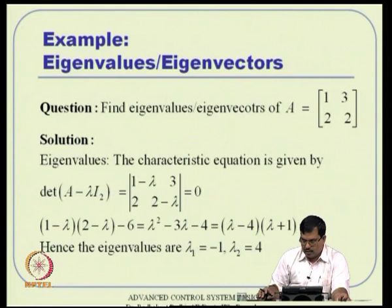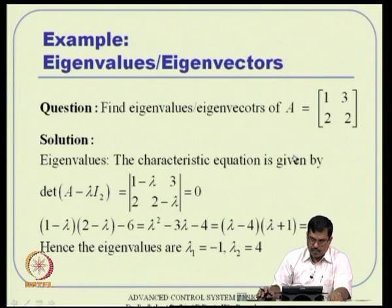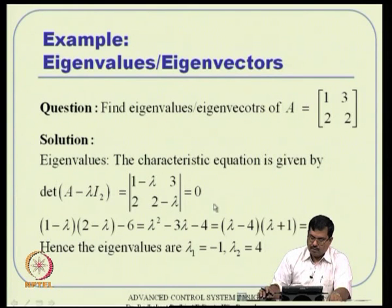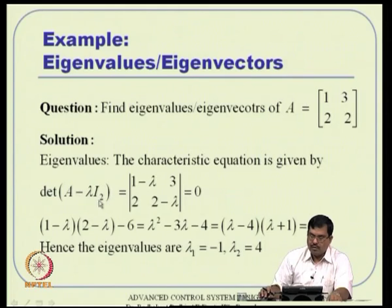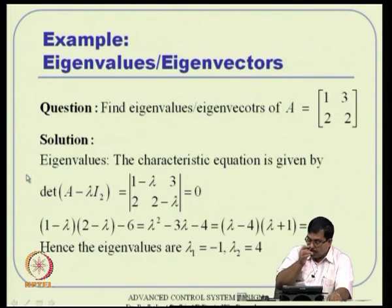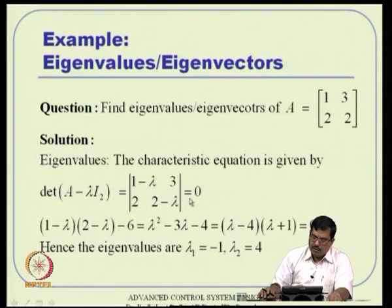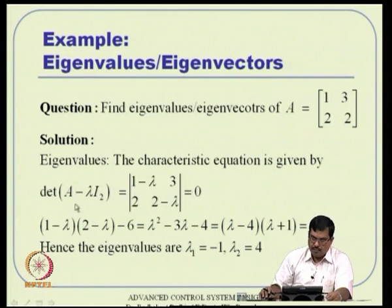Now let us find the eigenvalues and eigenvectors of a 2 by 2 matrix with an example. We start with the characteristic equation: det(A - lambda*I) = 0, or equivalently det(lambda*I - A) = 0 — either way is fine since the sign difference only introduces a factor of (-1)^n which cancels because the expression equals zero. Expanding the determinant gives us eigenvalues lambda_1 = -1 and lambda_2 = 4.